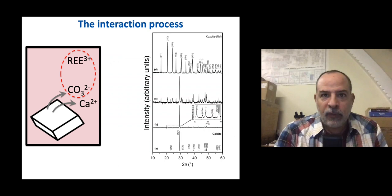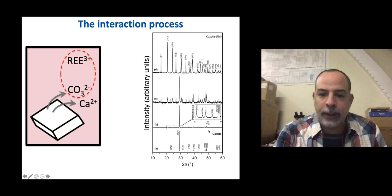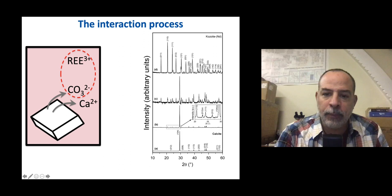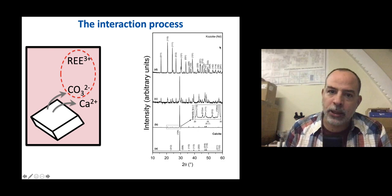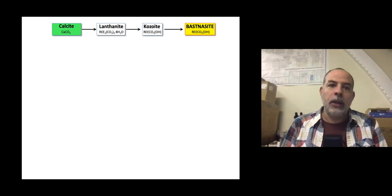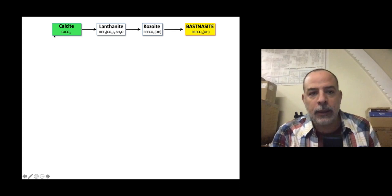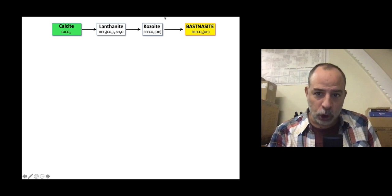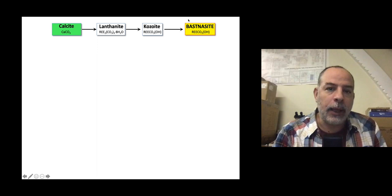We can follow this by X-ray diffraction: starting with calcite, we see the onset of crystallization with the first peaks of kozoite, which then grows while the calcite peak decreases, until we have kozoite only. The crystallization pathways show: calcite reacts with the solution to form lanthanite, lanthanite transforms to kozoite, and kozoite transforms to bastnäsite. We have seen how these minerals look — crusts of lanthanum lanthanite and neodymium lanthanite forming on calcite surfaces.